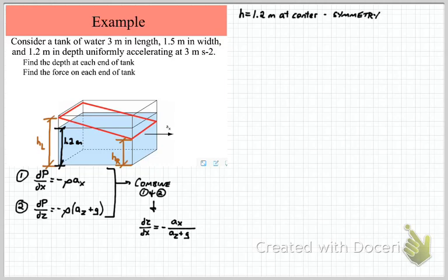So when this tank is actually accelerating, by symmetry everything that goes down on the right hand side will go up on the left hand side. It's sort of like rotating a flat plane and the center of the tank will still have a depth of 1.2 meters. So this is the symmetry of the problem.